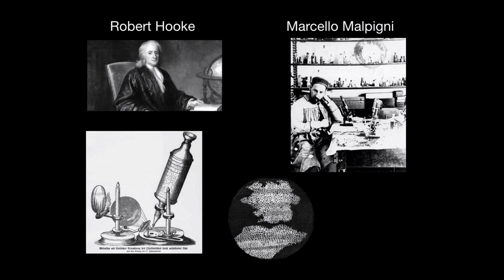How did they work? Well, they used a candle like this one as a source of light because they didn't have any electricity at that time. And they used this glass bulb filled with water to focus the light into a specimen — something they wanted to observe. And then that light was reflected into this microscope where they had different lenses to magnify the image.